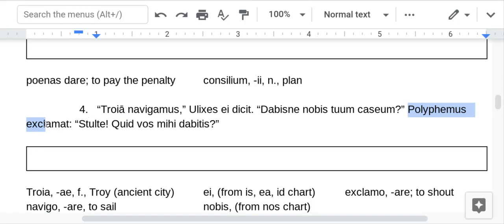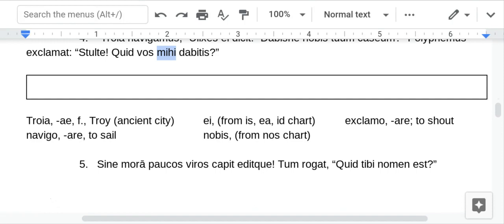Polyphemus shouts. Fool. Here's the rare evocative case. Normally it would be U.S. But if you're talking to somebody, change the U.S. into an E. So, fool or foolish man. What will you give? There's the U plural ending. It's future also. What will you give to me? Me, he is from the ego chart. Another pronoun chart. So, what will you give to me?